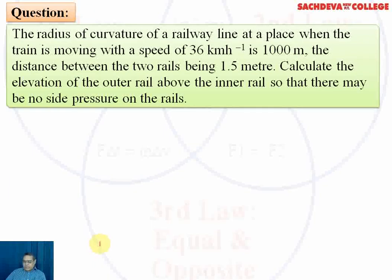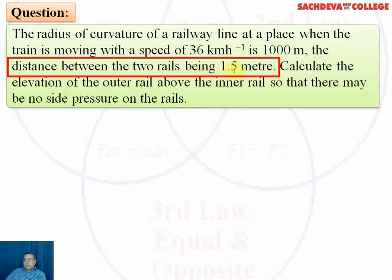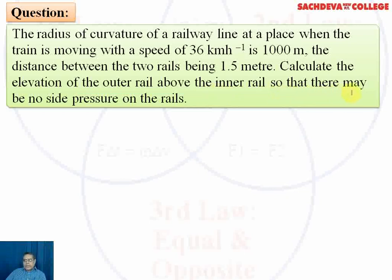Our next question: the radius of curvature of a railway line at a place where the train is moving with a speed of 36 kilometers per hour is 1000 meters. The distance between the two rails is 1.5 meters. We have to calculate the elevation of the outer rail above the inner rail so that there is no side pressure on the rails and the train is saved from skidding.